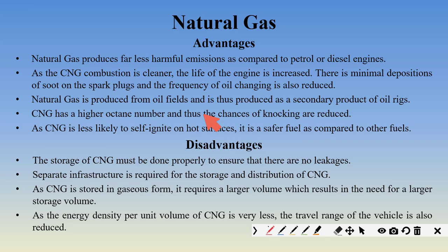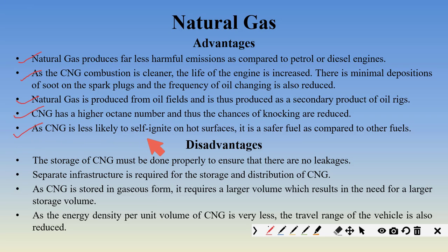The advantages of CNG: it has very low pollution compared to petrol and diesel engines. Because CNG undergoes cleaner combustion, the life of the engine is increased, it reduces soot deposited on the spark plug, and the frequency of oil changes is reduced. CNG is directly produced from oil fields as a secondary product. CNG has a higher octane number, reducing chances of knocking and allowing the compression ratio to be increased, improving efficiency. Due to its high self-ignition temperature, CNG is less likely to self-ignite, making it safer.